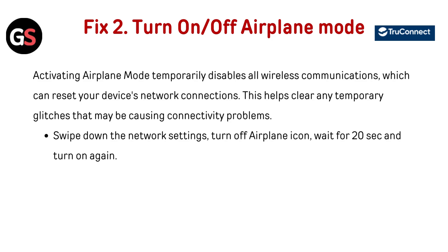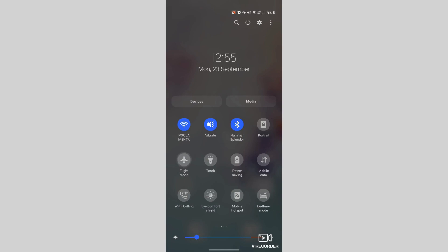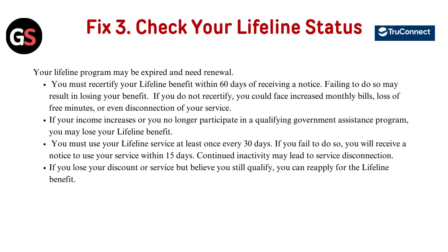Fix 2: Turn airplane mode on or off. Activating airplane mode temporarily disables all wireless communications, which can reset your device's network connection. This helps clear any temporary glitches that may be causing connectivity problems. Swipe down to the network settings, turn off the airplane mode icon, wait for 20 seconds, and turn it on again.